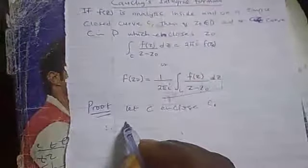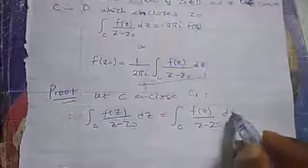Let's prove it. We know that if we enclose only C₁, then by the theorem we have proved before, this integral will be equal to the integral over C₁ of f(z) over (z minus z₀) dz.